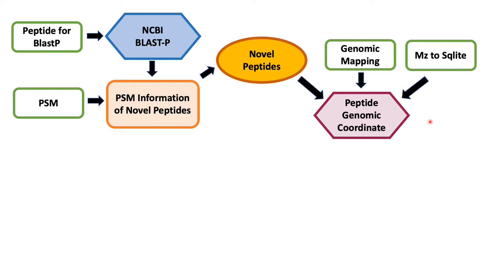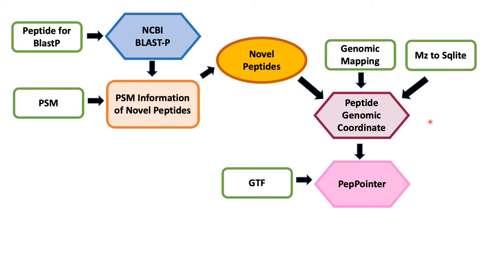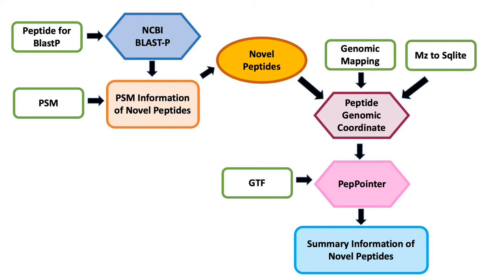To perform strand analysis and get more information about genomic localization, we have used a new tool called PepPointer. For PepPointer, the main input is your GTF file, which is the output from your first workflow, and the peptide genomic BED output. Once you get the information about your peptides, we have used QueryTabular to get a complete summary of your novel peptides — basically the information about the peptide, the protein it comes from, the file it's present in, and a link to the UCSC browser.